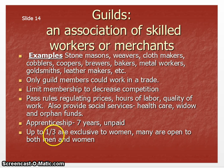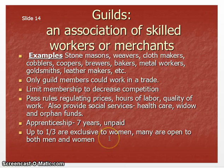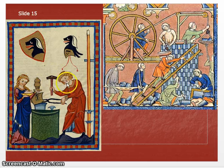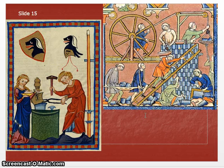One third of the guilds were exclusive to women and many had both men and women working in them. As we see in this picture of blacksmiths and masons, you can see in both pictures there are both men and women working together.